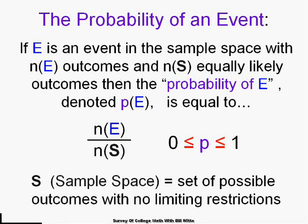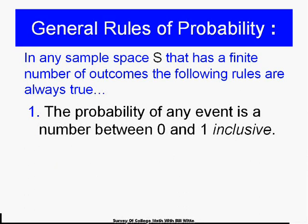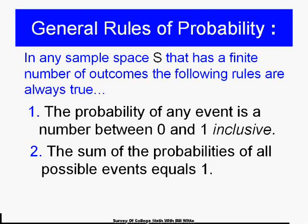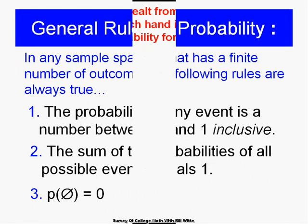Probabilities always come out to a number between 0 and 1 inclusive. The probability of any event is a number between 0 and 1. The sum of all the probabilities of the possible events in a sample space will be 1, because one of them has to happen. The probability of nothing happening, the empty set, is 0. The most useful rule: they all add up to 1.